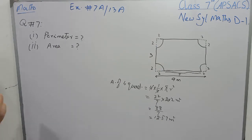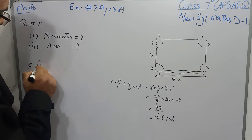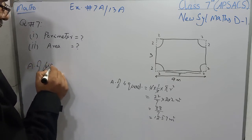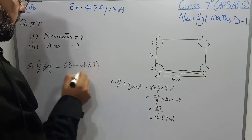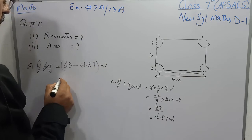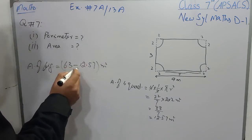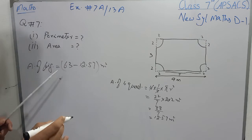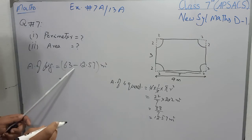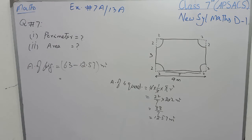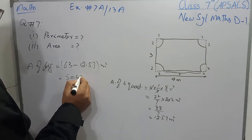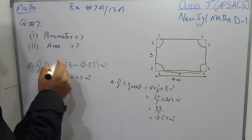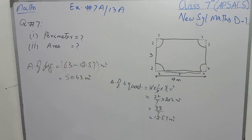Area of the figure equals 63 minus 12.57 meter square. Using a calculator, 63 minus 12.57 gives 50.43 meter square. That is the area of the figure.